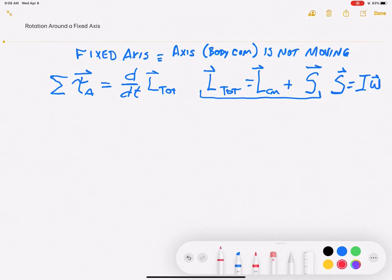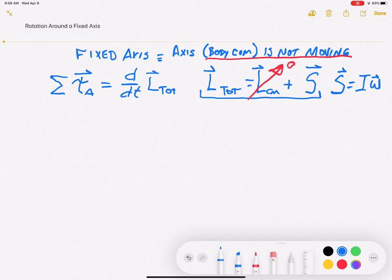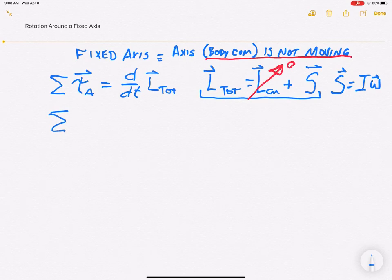So let's take the fixed axis condition. And because the body center of mass is not moving, this term here will go to zero. So no center of mass motion means no center of mass momentum, so no center of mass angular momentum. This fixed axis state allows us then to sum the torques about the rotation axis to get d/dt of the spin.